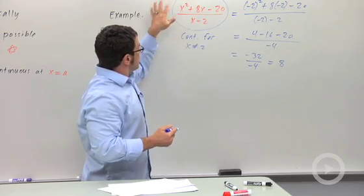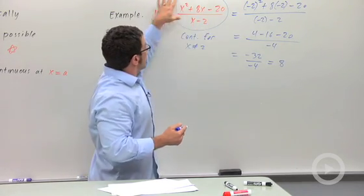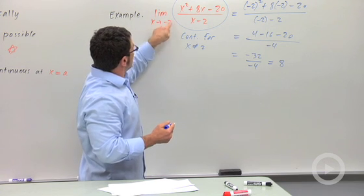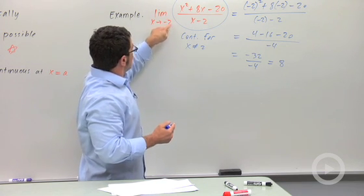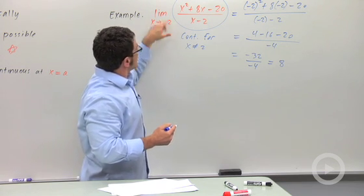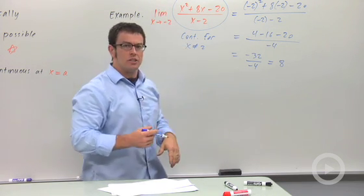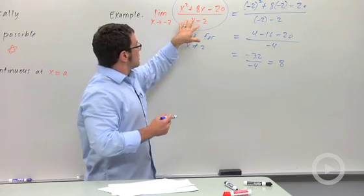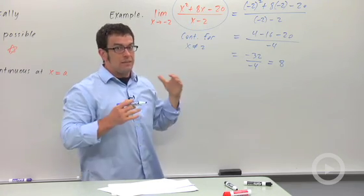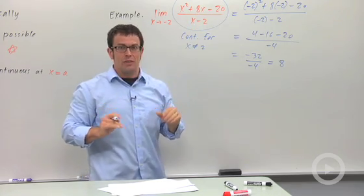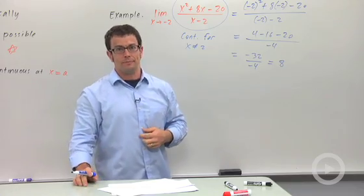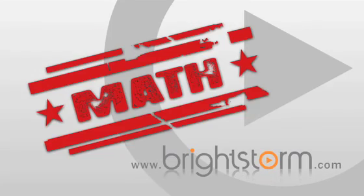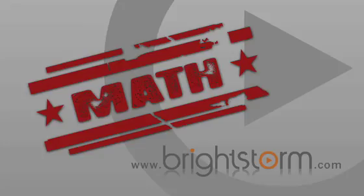Here I used continuity. You use continuity whenever you have a continuous function — you just plug in the value of the number a, whatever x is approaching, into the function and evaluate it. Now if that doesn't seem to work, like if you get division by zero when you do that, then the function is not continuous at that point and you have to use some other method.